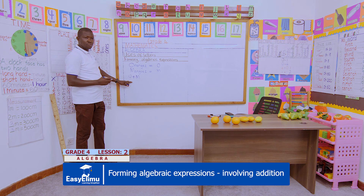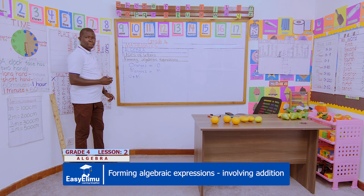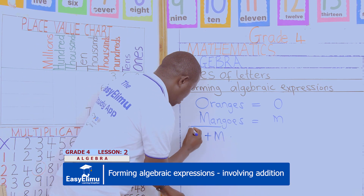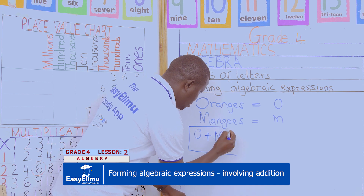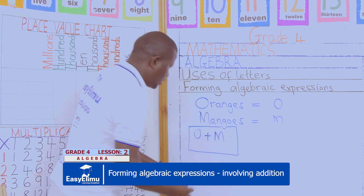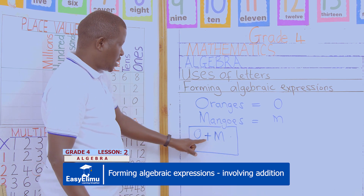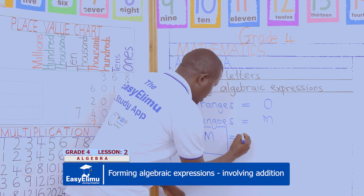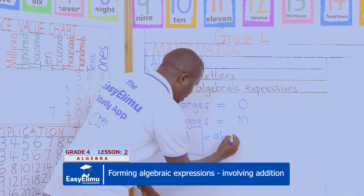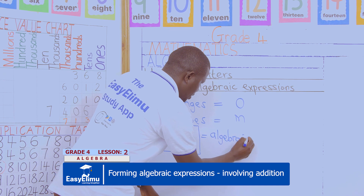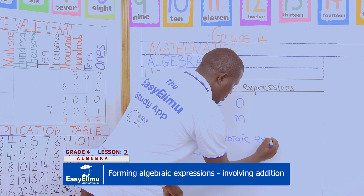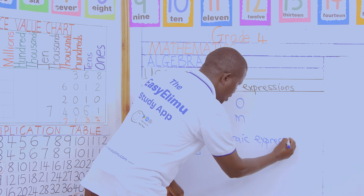The total number of fruits we have is O oranges and M mangoes. We call this an algebraic expression — this is what an algebraic expression is.